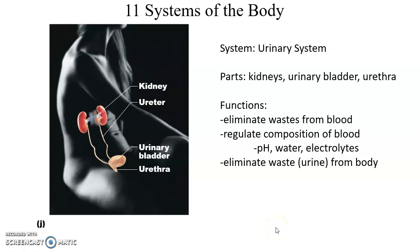The urinary system includes the two kidneys, the urinary bladder, and the urethra. The kidneys pull waste from the bloodstream to form urine, and also regulate the composition of blood — including electrolytes, water levels, and pH — to keep blood at the ideal level for health. The urinary system then excretes urine out of the body.